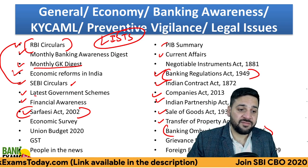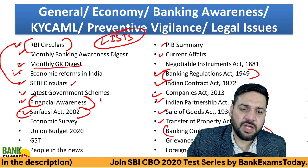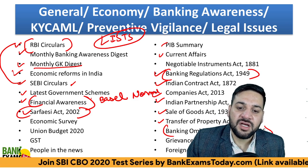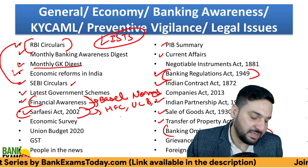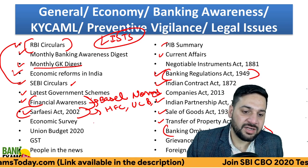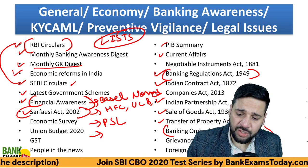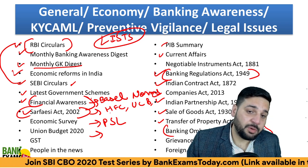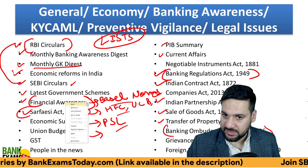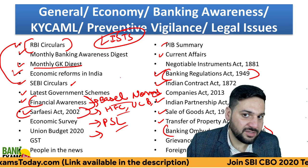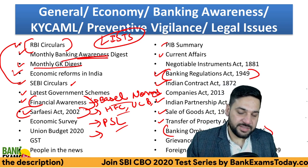Current affairs and PIB summaries are important. Financial awareness is a really deep topic — it covers Basel norms, RBI guidelines for HFCs, urban cooperative banks, payment gateways, and commercial banks. Priority Sector Lending (PSL) is a very important topic for the exam. Digital lending platforms are very important nowadays. Financial awareness is more than just banking awareness — whatever is happening in the banking industry is in the banking awareness digest, but financial awareness is broader than that.